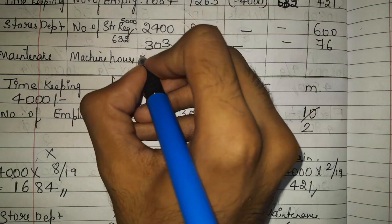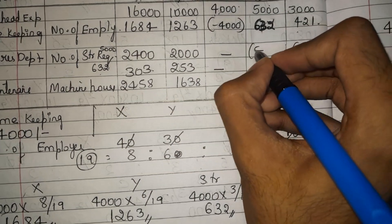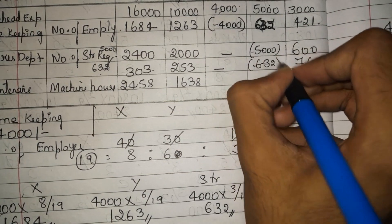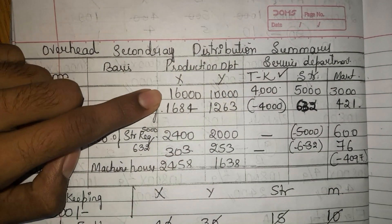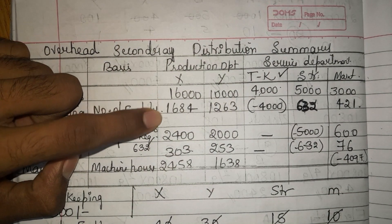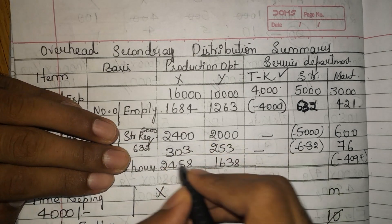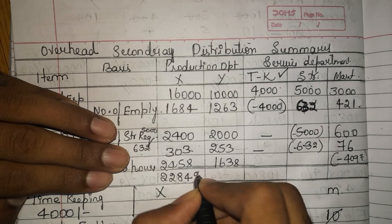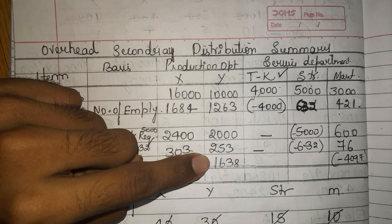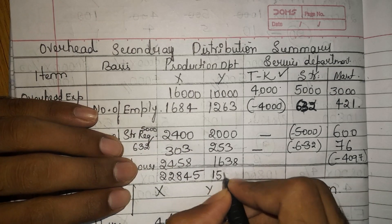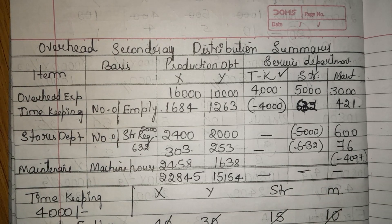We write 2,458 for X and 1,638 for Y, and show minus 4,097 for maintenance. Now we do the final totaling: X = 16,000 + 1,684 + 2,400 + 303 + 2,458 = 22,845. Y = 10,000 + 1,263 + 2,000 + 253 + 1,638 = 15,154. All service department columns close to zero. This is how we solve the problem.